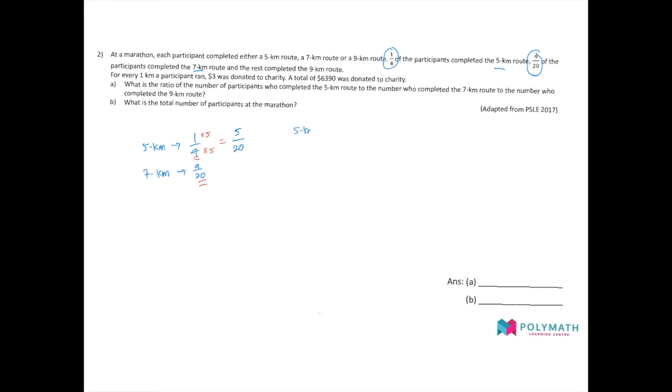I change the 5km route fraction to 5 over 20. So we can actually express a ratio now. The ratio of 5km participants, 7km, and the participants taking part in the 9km route. We know that the denominator is 20, so the total number of units is 20. The 5km route will be 5 units, 7km is represented by 9 units. So 9km participants is represented by 20 units minus 5 minus 9, which total sum up to 14. So 20 minus 14 is 6 units. The ratio for 5km route to 7km route to 9km route is 5 is to 9 is to 6.